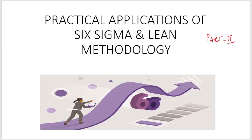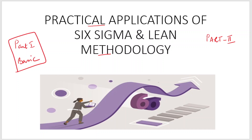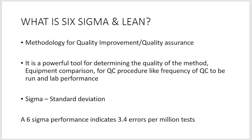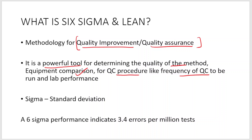Hello everyone, this video is on practical applications of Six Sigma and lean methodology. I had already done a part one session where I covered the basic concepts of Six Sigma and lean, so if you haven't watched that, please do watch that video before watching this. The methodology is mainly used in quality improvement and quality assurance, and it is a very powerful tool which helps to determine the quality of any method, equipment comparison, and for QC procedures like frequency of QC to be run for any method.